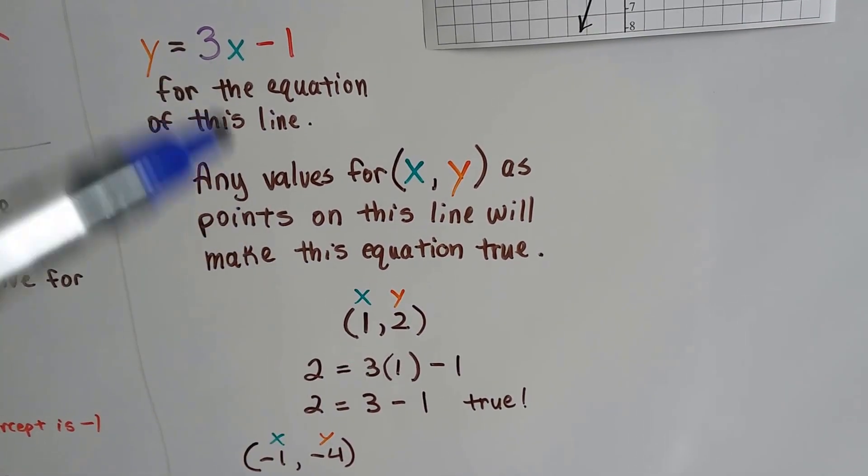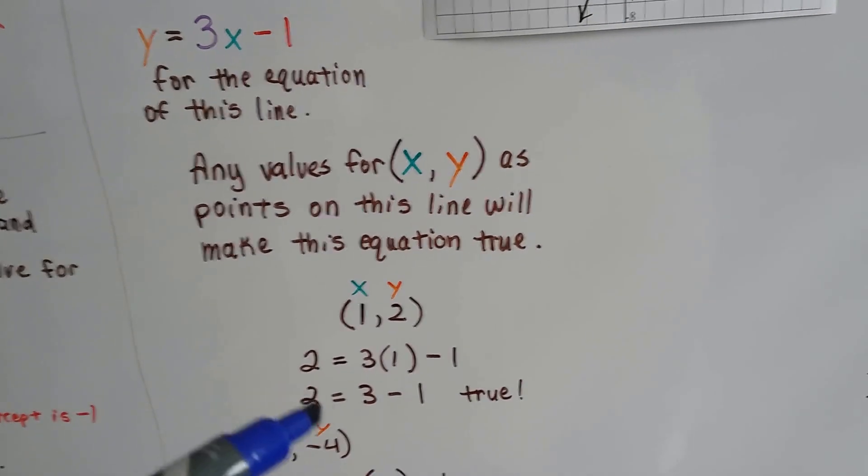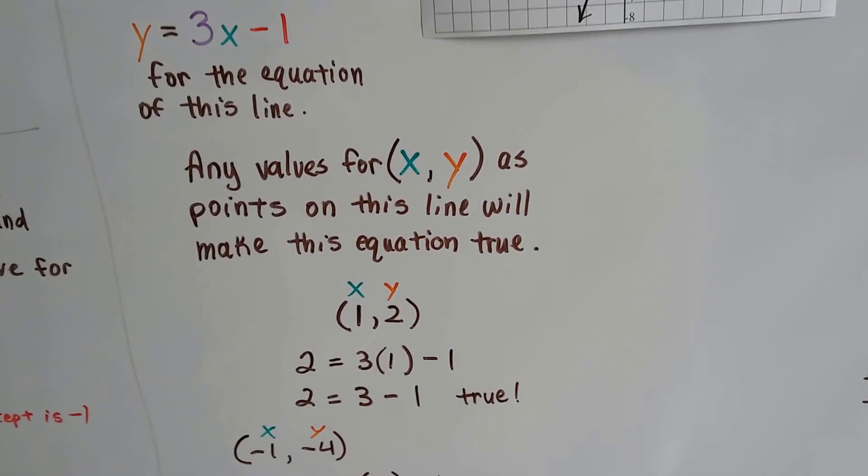that means we've got our y-value is a 2, our slope is a 3, we multiply it by x, which is 1 minus 1, 2 equals 3 minus 1. Yeah, that's true.